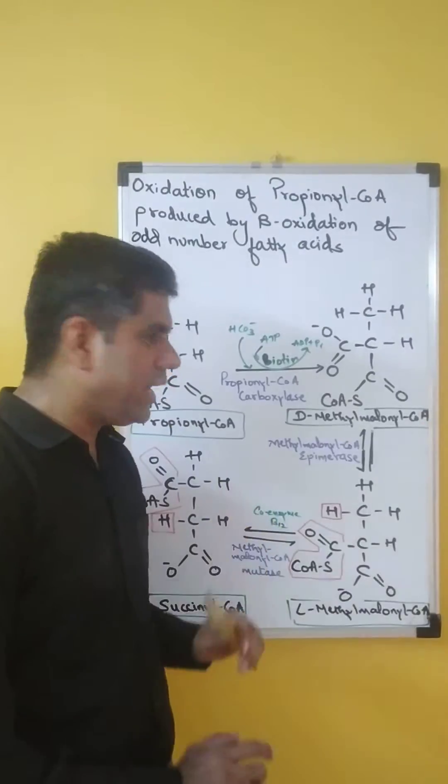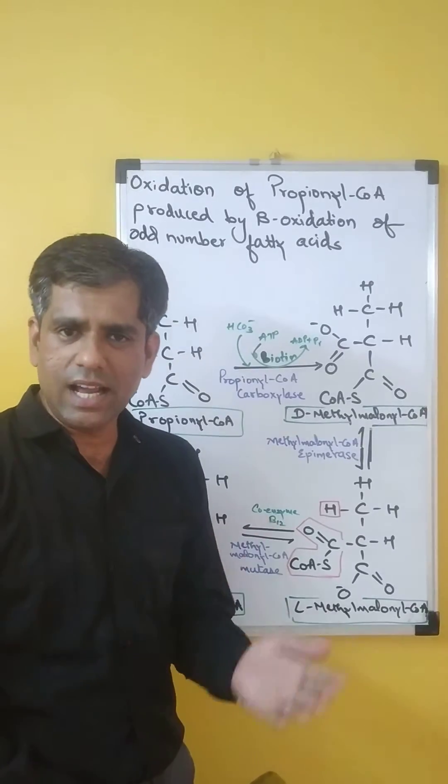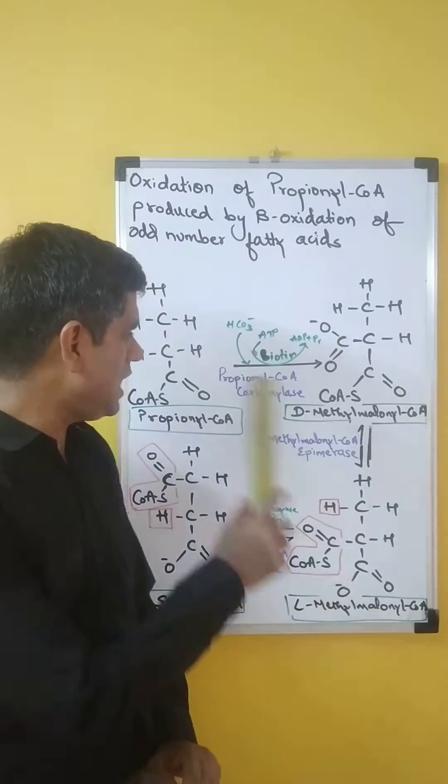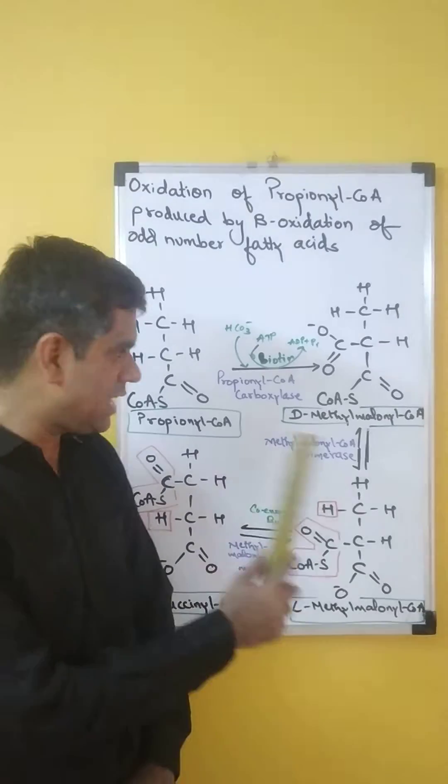For this propionyl-CoA to enter into the citric acid cycle, it has to undergo three enzymatic steps. We will look at these in detail.